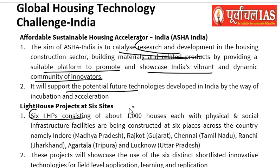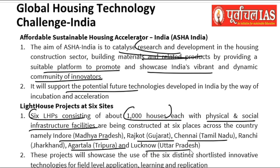It will support the potential future technologies also. Lighthouse projects kya hain — six Lighthouse Projects, consisting of about thousand houses each, with physical and social infrastructure facilities. Global solutions ka use karke infrastructure kiya gaya hai. Thousand houses construct kiye gaye hain pilot project ke dwara — Indore, Rajkot, Chennai, Ranchi, Agartala, and Lucknow — in six places. These projects will showcase the use of six distinct shortlisted innovative technologies, aur unko pilot project ke jaisa testing aur learning ke liye use kiya jayega.